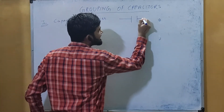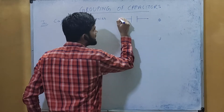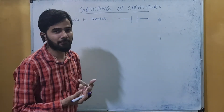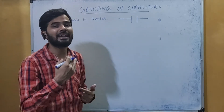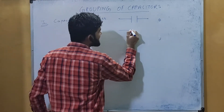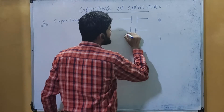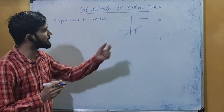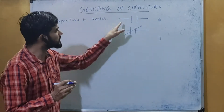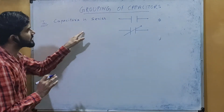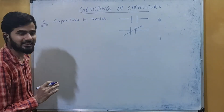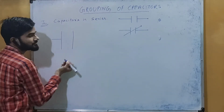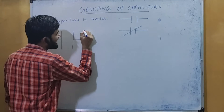First of all, how are these capacitors represented? Capacitors are generally represented by this symbol. If we want to represent a variable capacitor — one whose capacitance can be varied — that is represented by this symbol with an arrow. Here we will represent all capacitors with the fixed-value symbol.